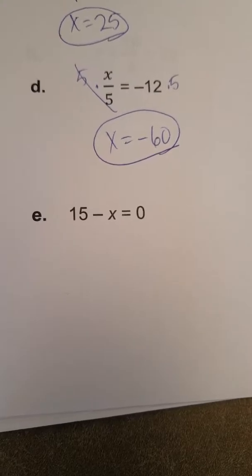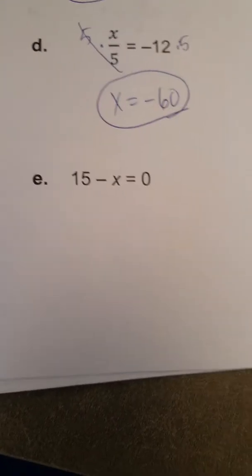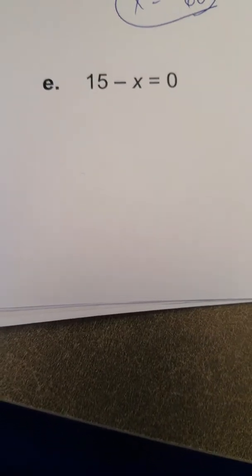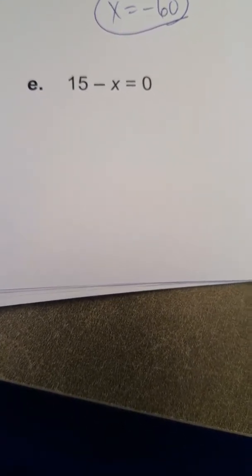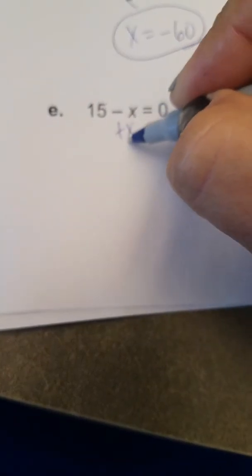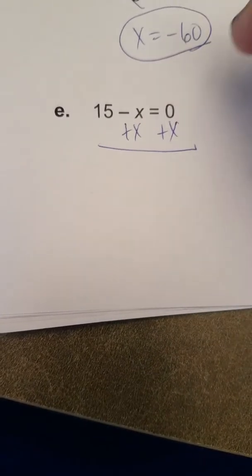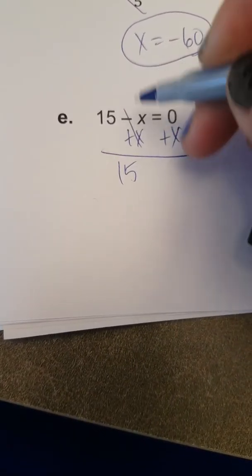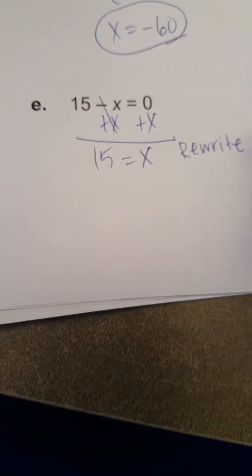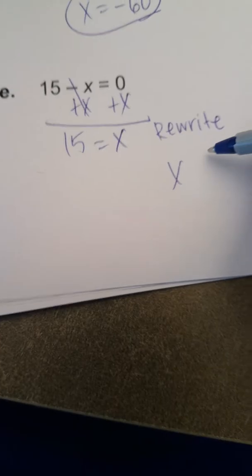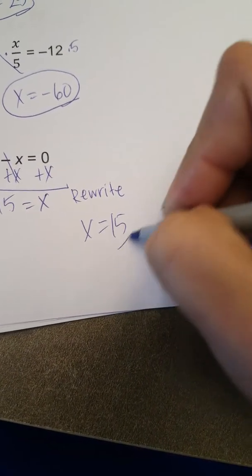And in the next example, 15 minus x equals 0. Some people will be tempted to subtract 15 from both sides, but that will add an extra step to solving this equation. I would prefer to add x to both sides, and so when I do that, I get 15 is equal to x, or if I want to rewrite it with the variable first, I get x is equal to 15.